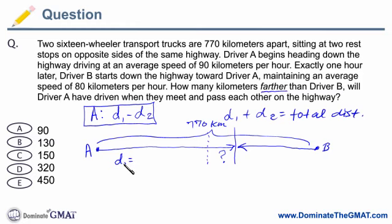And in this case, driver A, I'm just going to call that driver 1 just to stay consistent. Driver A, his rate and his time is what? So his distance is rate times time. Well, we're told that his rate is 90 kilometers an hour. And his time is? Well, we don't know. So that's the variable, time T.